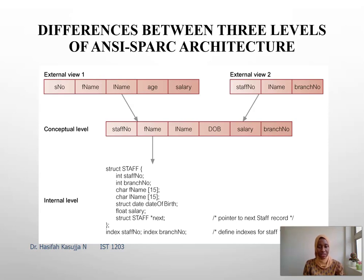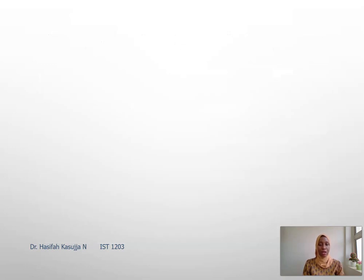Illustratively, at the internal level you have different attributes for an entity called staff: staff number which is an integer, branch number which is also an integer, first name and last name which are char with domains of 15. At the conceptual level it just gives you a high-level conceptual view of the data. Then at the external view, for example, external view one is the table called staff, and external view two is the table called branch. When describing mapping, we'll describe how the different mappings take place across these three levels of ANSI.